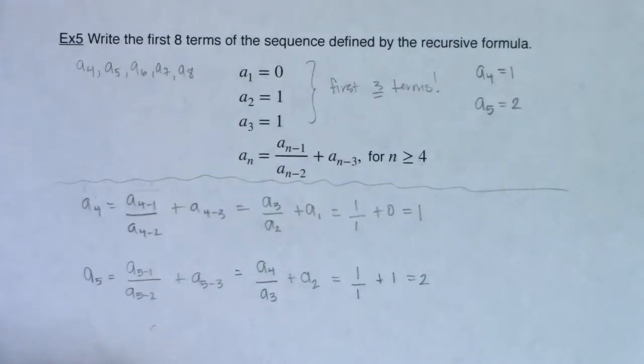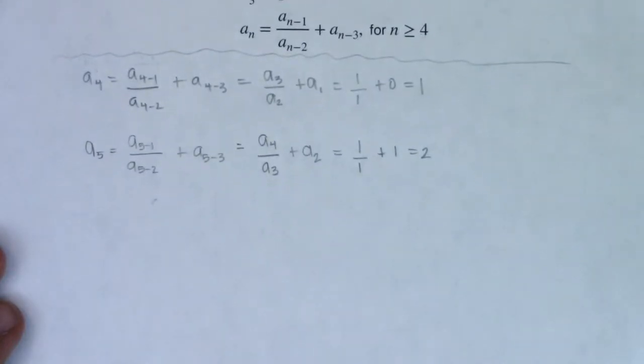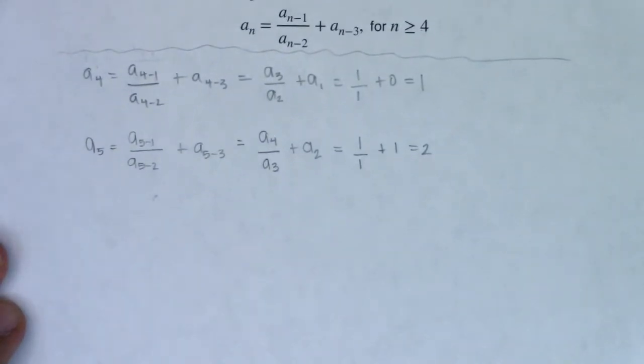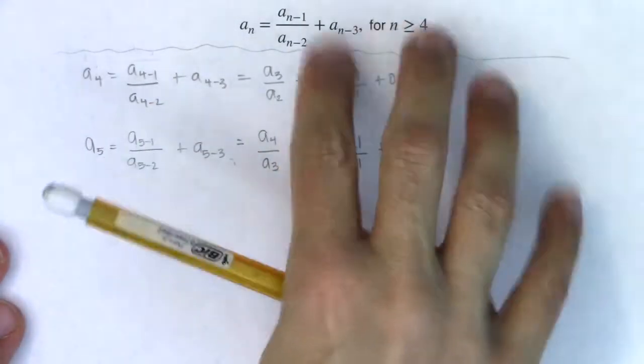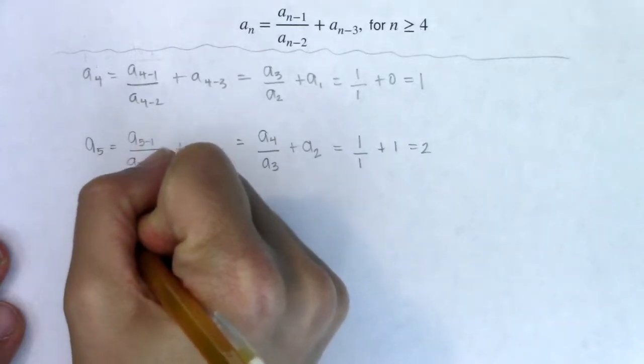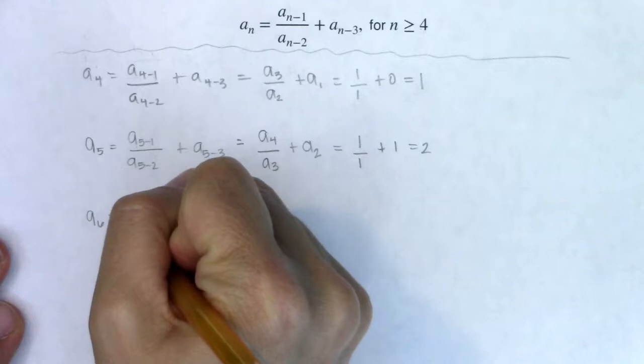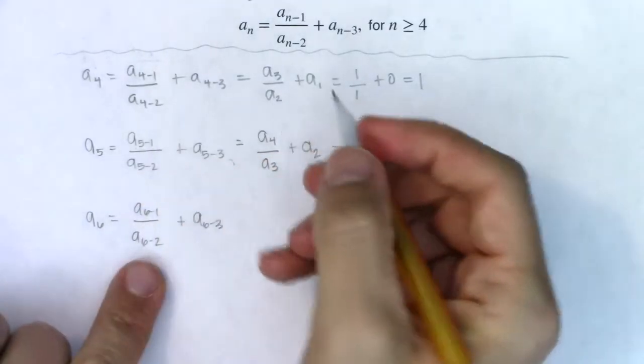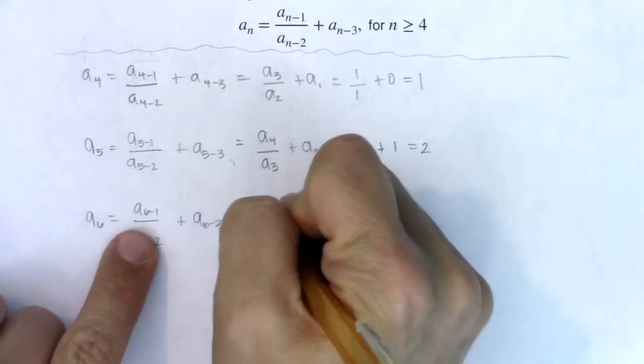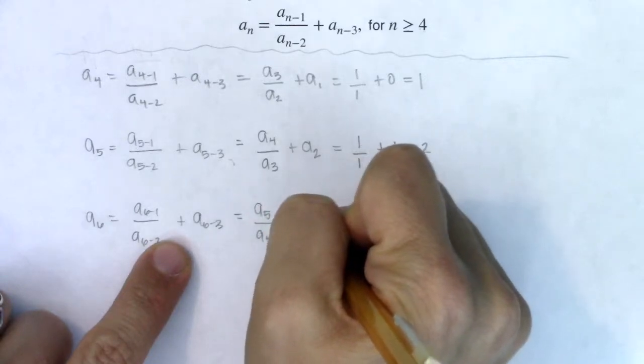Okay, great. I'm going to keep on going. I'm going to scooch this up a bit, just so we can keep that formula in view, and we'll try and get a sub six. I might run out of space. I might not be able to keep this in view the entire time. But let's see what we got. A sub six would be a sub six minus one in ratio to a sub six minus two plus a sub six minus three. And let's see what this turns into.